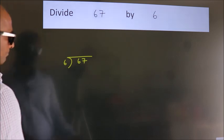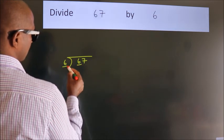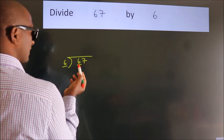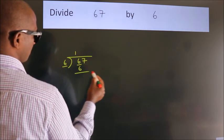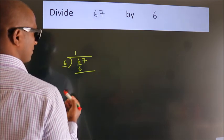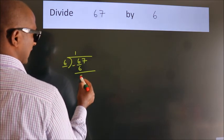Next. Here we have 6. Here 6. When do we get 6? In the 6 table. 6 ones, 6. Now we should subtract. We get 0.